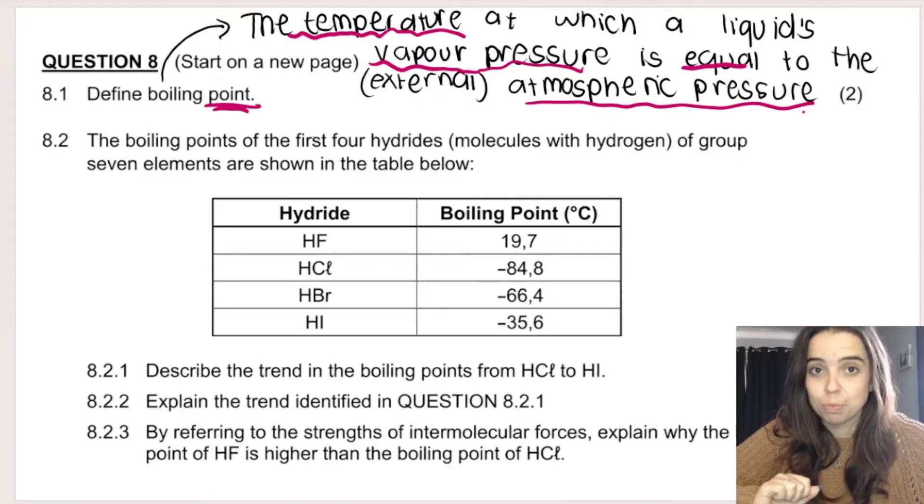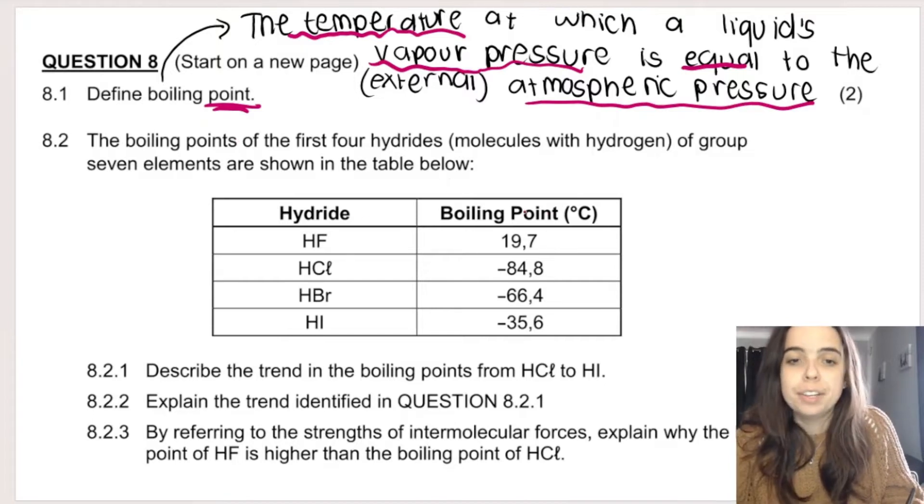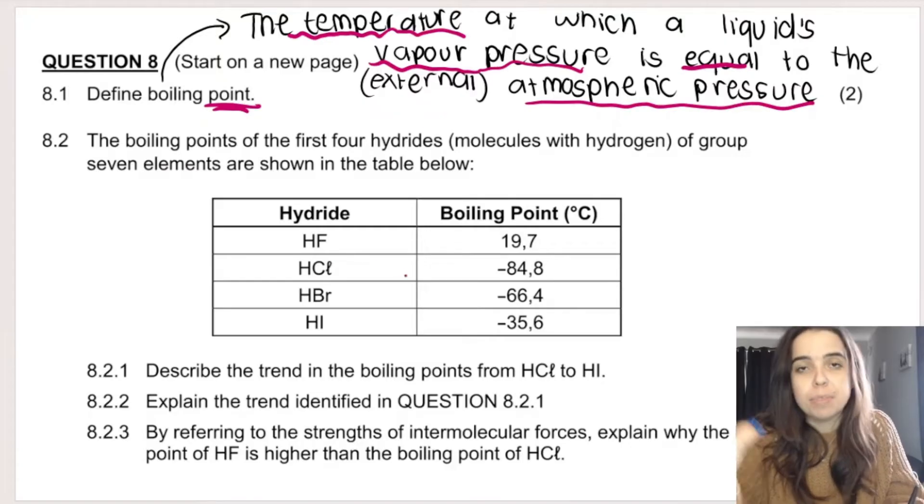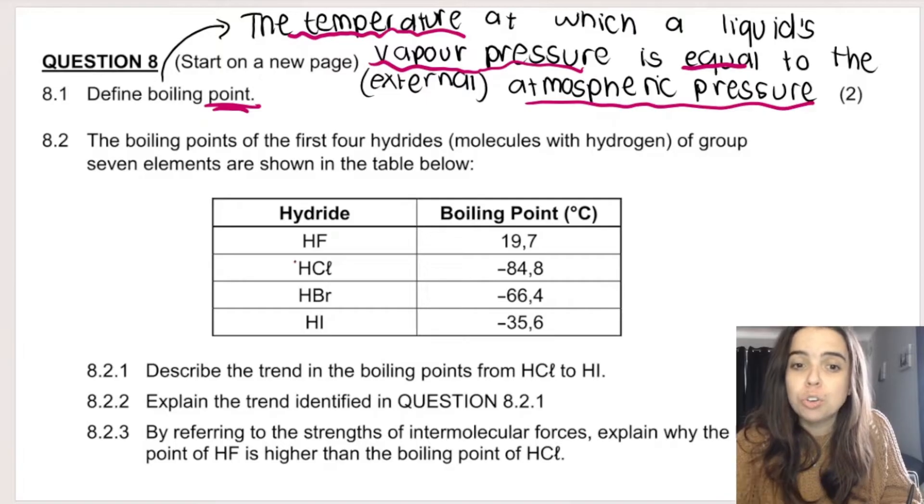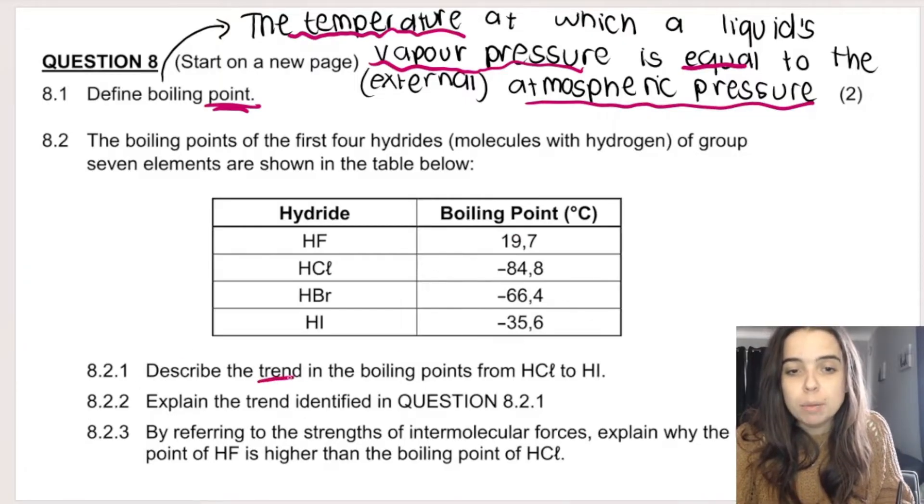Okay, let's take a look at the table in 8.1.2. When you're given a table, it's very important to look at the headings of the table, the column headings, and the data given. This says boiling points of the first four hydrides. Hydride is when something is bonded with hydrogen. Here we can see hydrogen fluoride, hydrogen chloride, hydrogen bromide, and hydrogen iodide. They're all bonded with hydrogen.